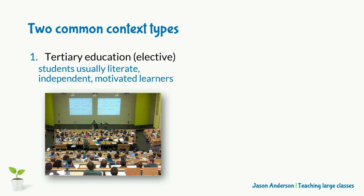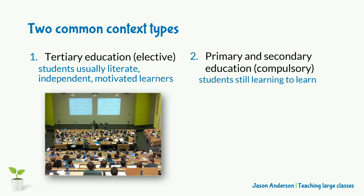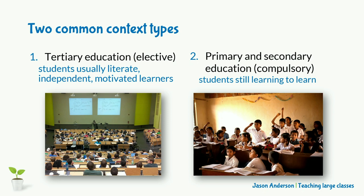The second broad context involves primary and secondary levels, compulsory education, and is often found in mainstream educational systems of low-income countries across the global south, particularly in parts of Africa and South Asia, but also sometimes in East Asia. At primary and secondary levels, learners are still learning to learn. Many may lack basic literacy and social skills, and because school and English lessons are compulsory, motivation levels may vary a lot.